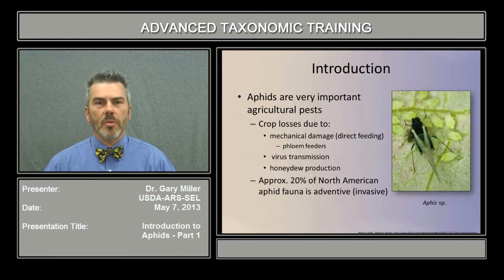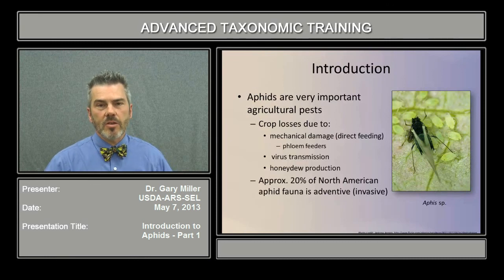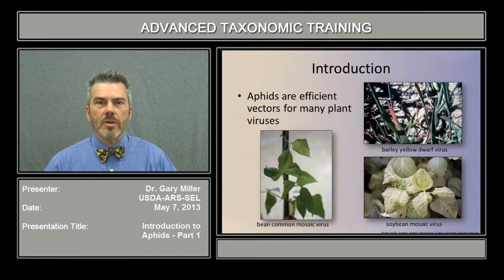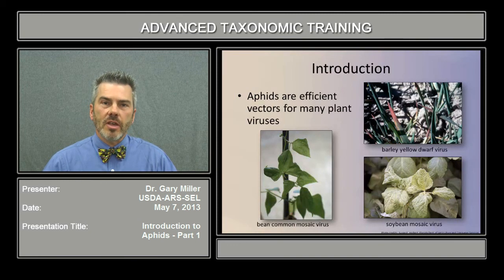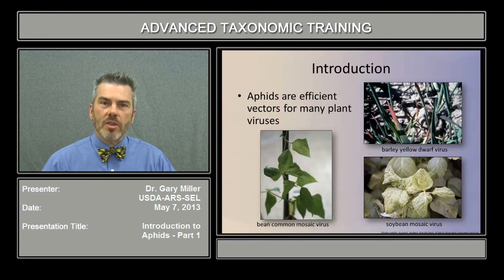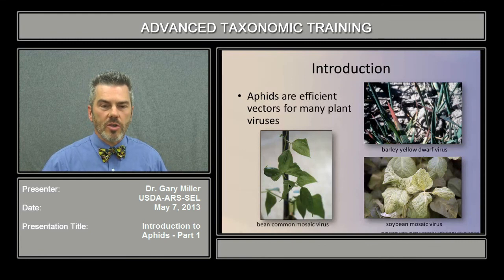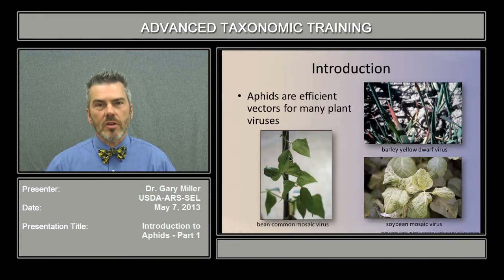Approximately 20% of the North American aphid fauna is considered inventive, or invasive, so they represent a very important part in the agricultural scheme. Aphids are efficient vectors of many plant viruses. Dr. Halbert will be explaining in more detail about some of these viruses, but here are some examples of aphid-transmitted viruses, such as the bean common mosaic virus and the soybean mosaic virus. You can see in these illustrations and photographs some of the modeling that occurs due to aphid transmission of the disease.